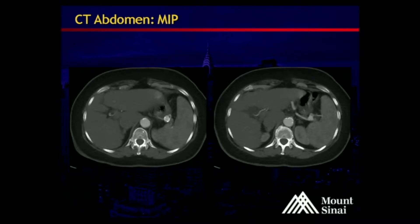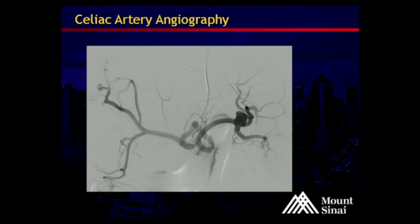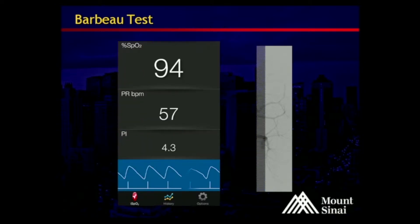The MIP reconstruction shows multiple vessels originating from the aneurysm itself. This is actually an angiogram from one of the chemoembolizations, which demonstrates the aneurysm nicely, again at the hilum with multiple vessels originating from the aneurysm itself.